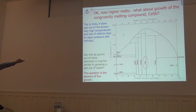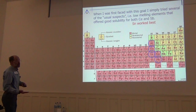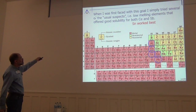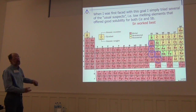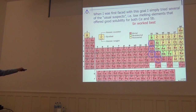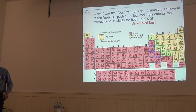You can grow cerium monoantimonide out of some other element — not out of excess cerium or excess antimony. You want that element to be something that melts low. When I had this problem about 30 years ago, I used the usual suspects: aluminum, gallium, indium, tin, lead — all relatively low melting elements. It turns out tin worked best; I figured that out by trying all of them.